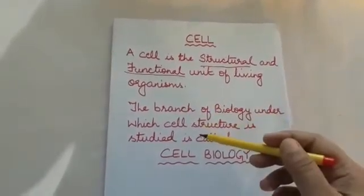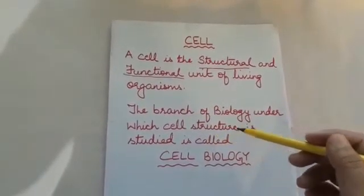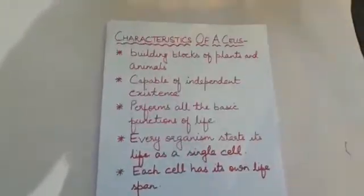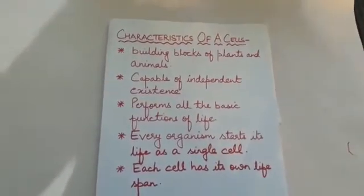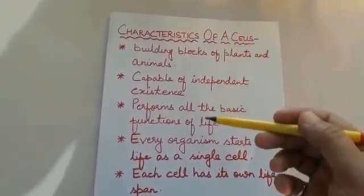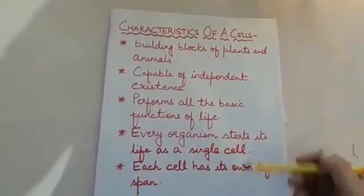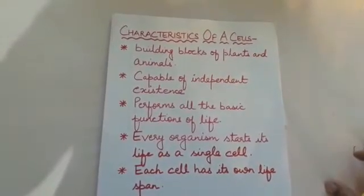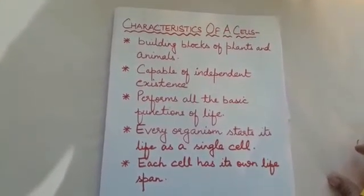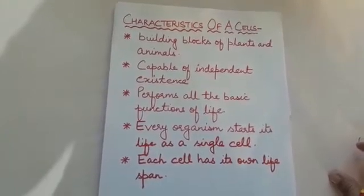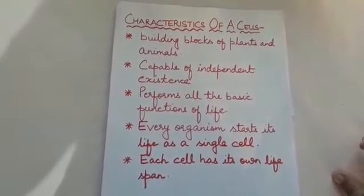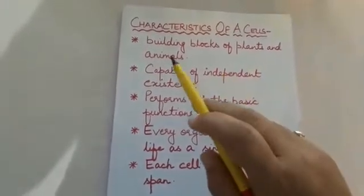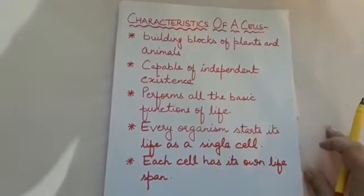The branch of biology under which cell structure is studied is called cell biology. The next topic is characteristics of the cell. A cell has basically five characteristics. Number one: cells are the building blocks of plants and animals. It means all living organisms are made up of cells, and multicellular organisms are an aggregate of cells. That is why we say that cells are the building blocks of plants and animals.